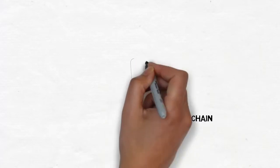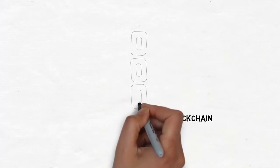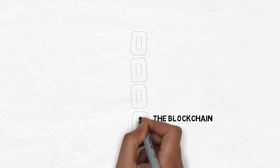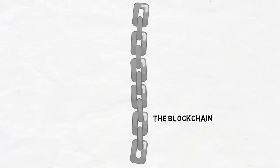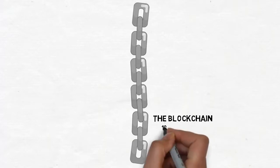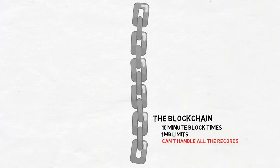The Bitcoin blockchain presents an amazing solution to the problem of record keeping. It's a permanent, immutable database of records secured by tens of thousands of computers across the globe. With blockchain technology, it's possible to permanently secure the world's data. However, the blockchain has some constraints. Ten minute block times and one megabyte block limit means it can't handle all the records we want to store on it.